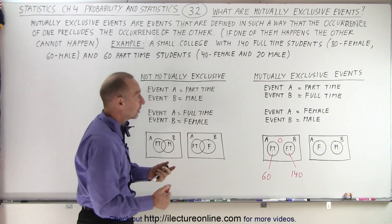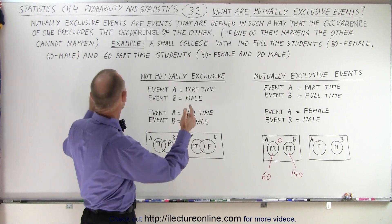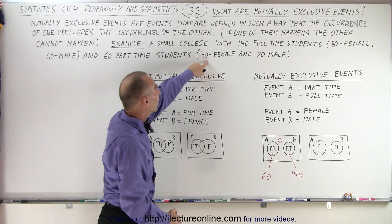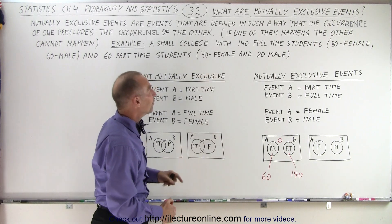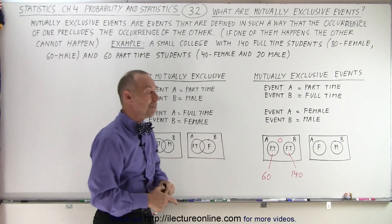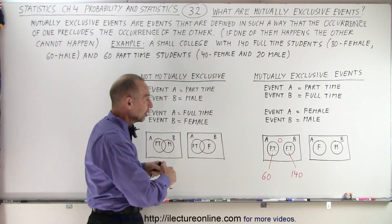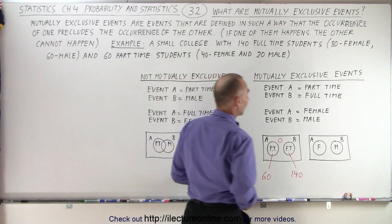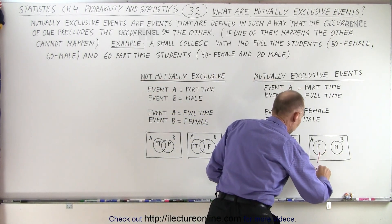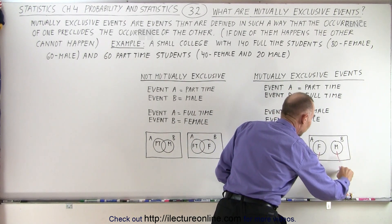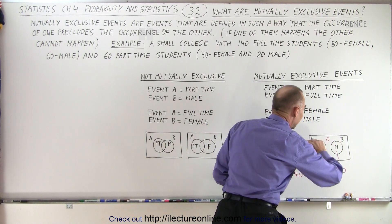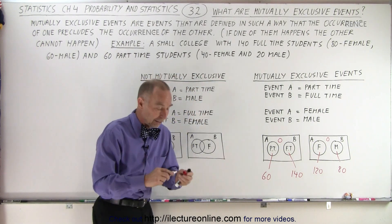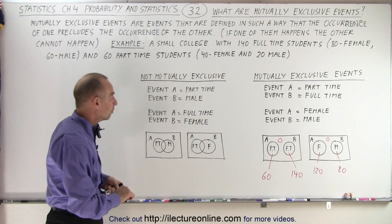How about females and males? In this particular college, there are a total of 120 females and 80 males. Again, in this college, you cannot be both female and male. So female accounts for 120 and males account for 80, and there's zero in the rest of the box because that includes the entire student body.